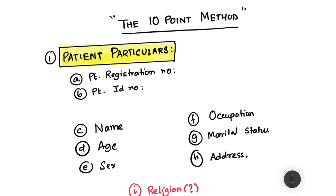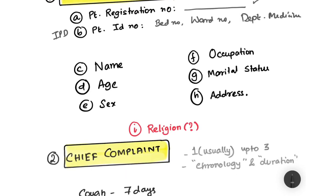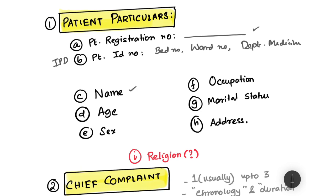We start with patient particulars — the details of the patient. First, note the patient registration number provided by the hospital. If the patient is in the inpatient department, write the bed number, ward number, and department — for example, Department of Medicine. This way you will be able to identify the patient. Then take the name of the patient.